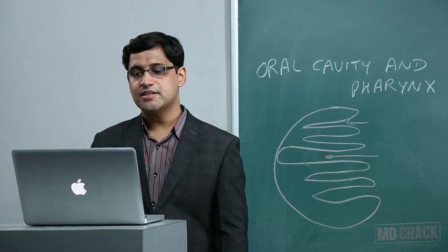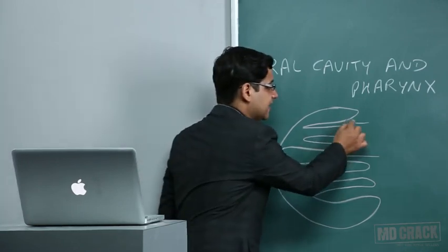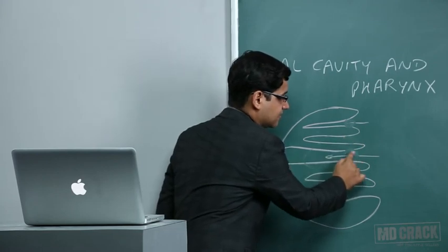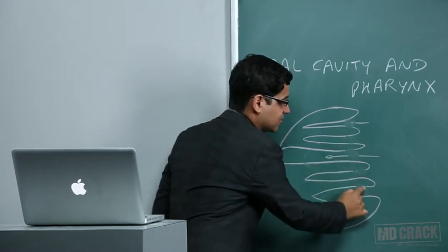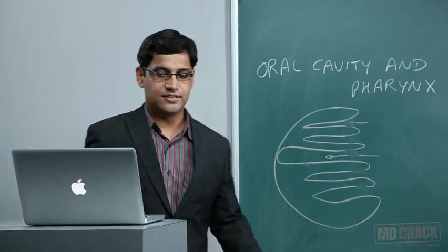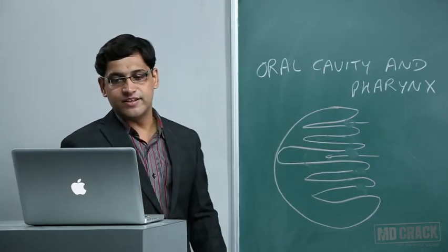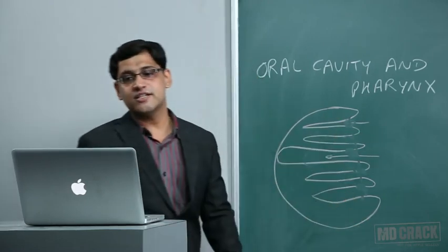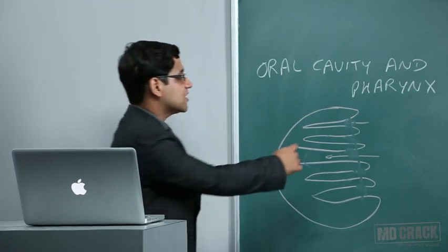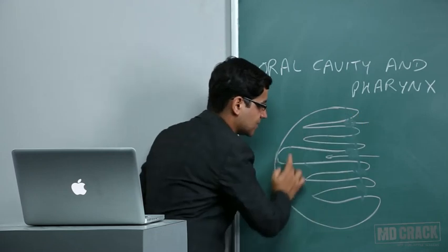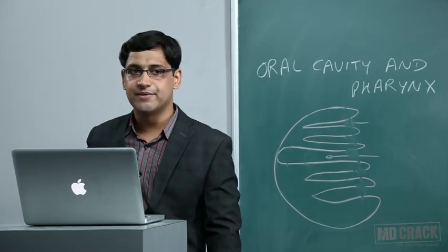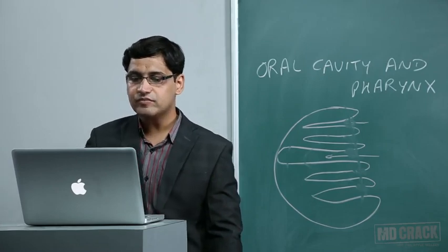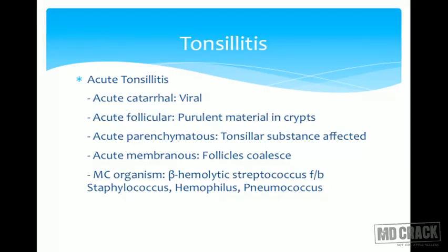When purulent materials in the crypts combine, they form a membrane — known as acute membranous tonsillitis. When the whole substance of the tonsil is involved, it is acute parenchymatous tonsillitis. The most common organism causing acute tonsillitis is beta-hemolytic streptococcus, followed by staphylococcus, Haemophilus, and pneumococcus.